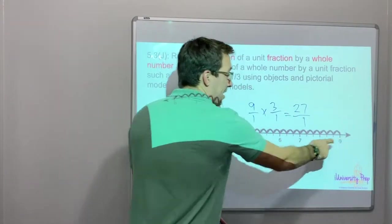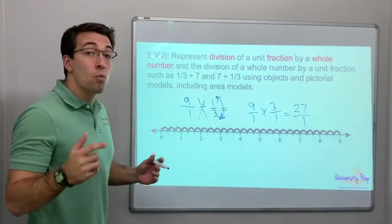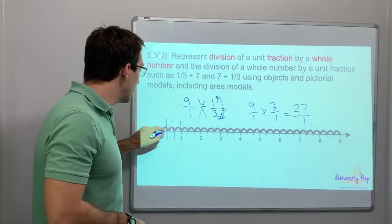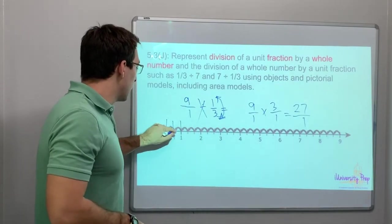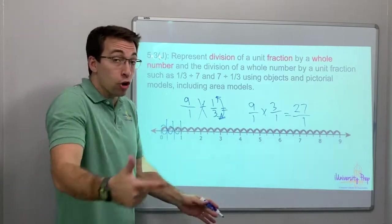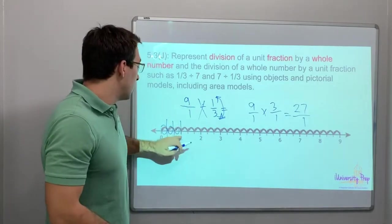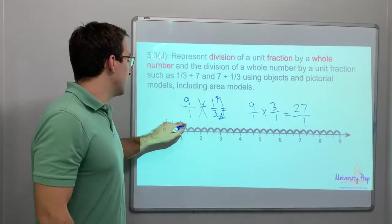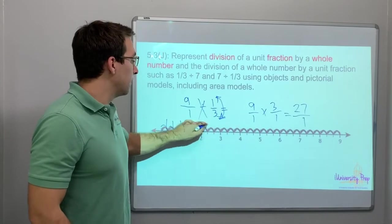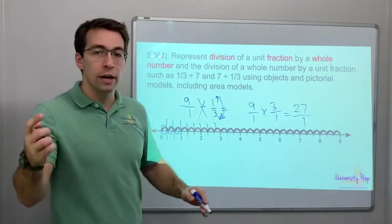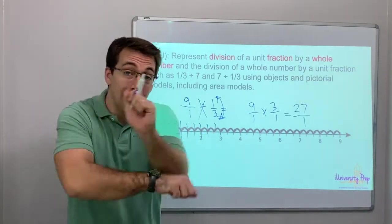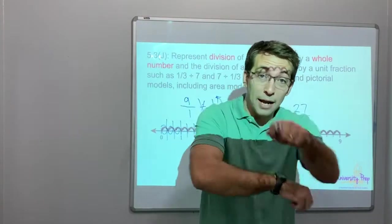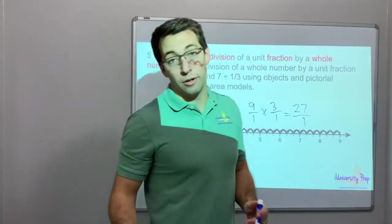9 divided by 1/3 — look, there are 3 per number, all the way to 9, you get 27 if you were to do that all the way up. So you multiply and flip. That is what we're doing.